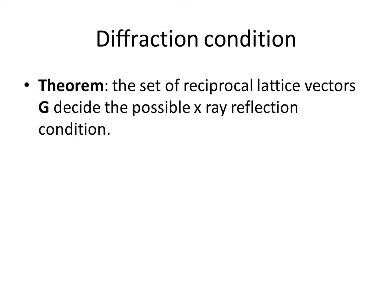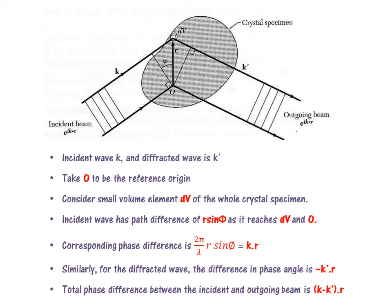Previously we represented the diffraction condition in terms of the Bragg equation or the Laue equation. Now we express it in terms of the reciprocal lattice vector G. To find the scattered wave amplitude in a given direction, we consider a crystal specimen and inside it an infinitesimally small volume element dV. k represents the incident monochromatic x-ray wave vector and k' the diffracted wave.